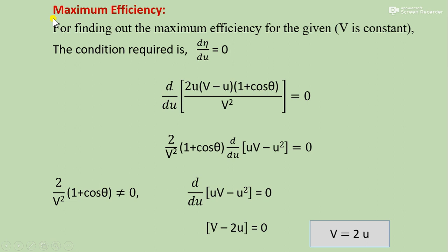Now for the derivation of maximum efficiency. Keeping jet velocity V constant, the variable is plate velocity u. The condition for maximum efficiency is d(eta)/du equals zero.